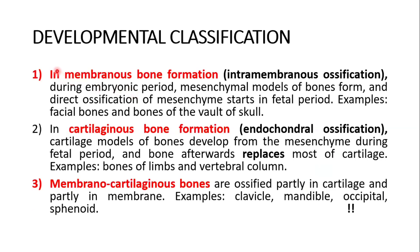In the last, the developmental classification in short — detail is covered in histology and embryology. In membranous bone formation or intramembranous ossification, mesenchymal models of bones form during the embryonic period and direct ossification of mesenchyme starts in the fetal period. Examples include facial bones and bones of the vault of the skull. In cartilaginous bone formation, also called endochondral ossification, a cartilage model develops from mesenchyme during the fetal period and bone afterwards replaces most of the cartilage. Examples include bones of the limbs and the vertebral column. There is also a combination — membranochondral — ossified partly in cartilage and partly in membrane. Examples include the clavicle, mandible, occipital, and sphenoid.